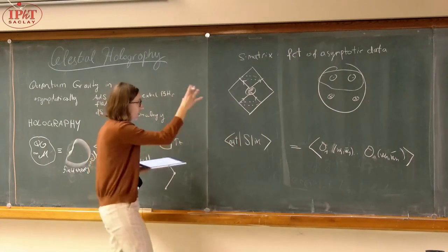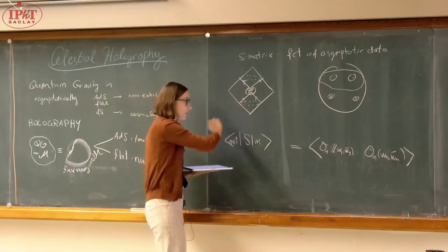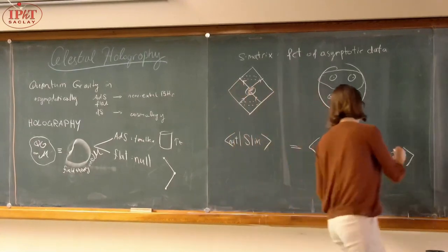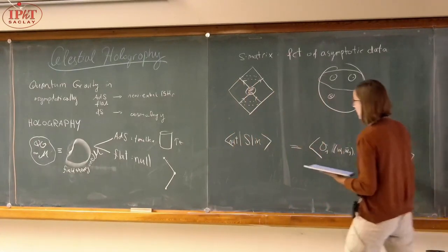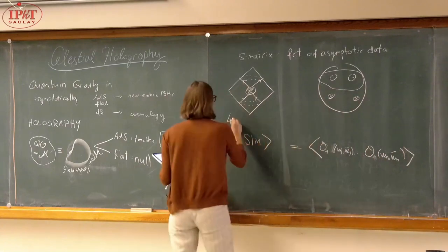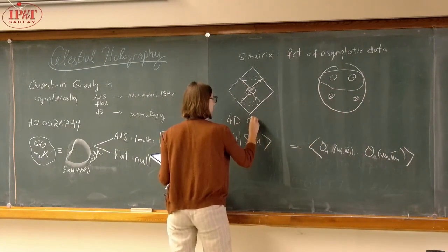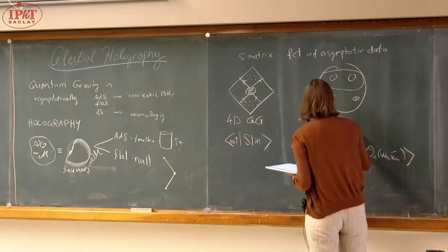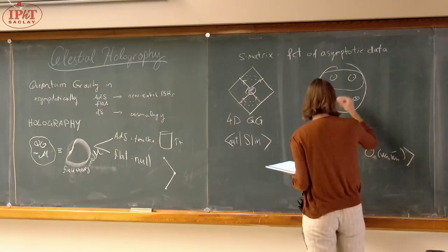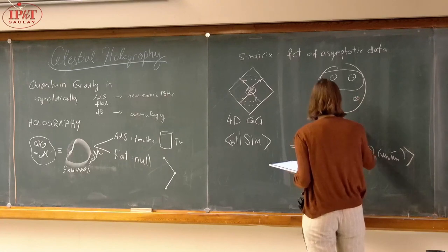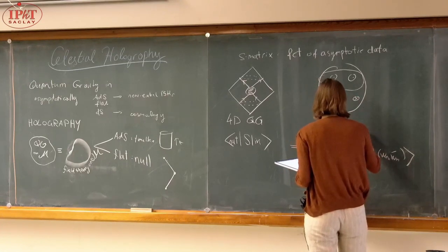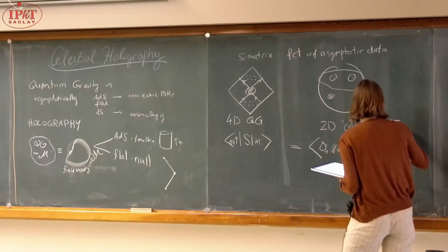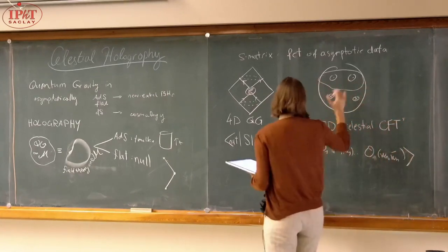This tells us that the S-matrix in asymptotically flat space looks like a conformal correlator on the two-dimensional sphere at null infinity. The conjecture is that four-dimensional quantum gravity can be described by a theory that lives on the two-dimensional celestial sphere. We call this theory celestial CFT — conformal field theory — because the Lorentz group acts as the conformal group.